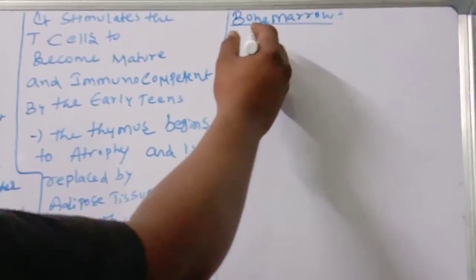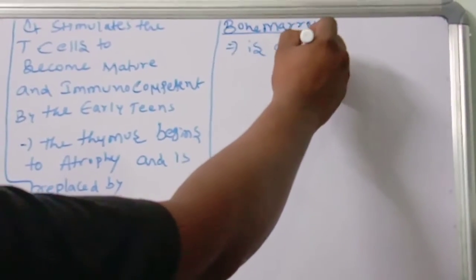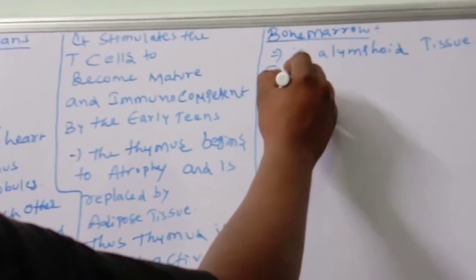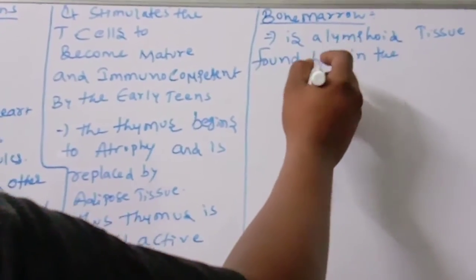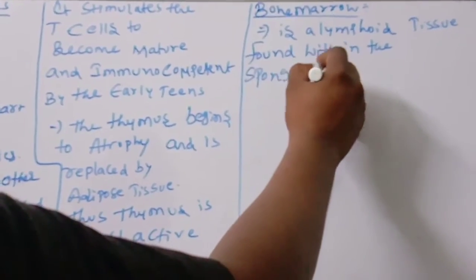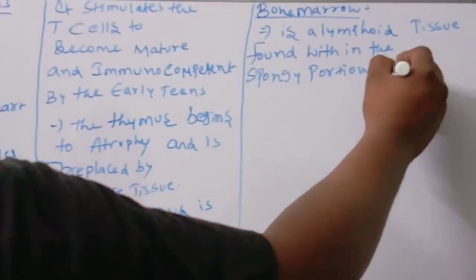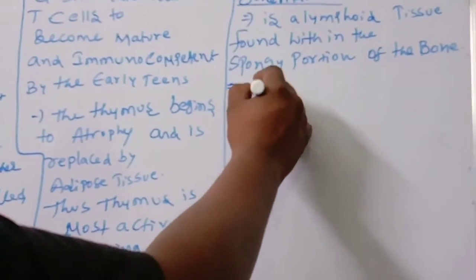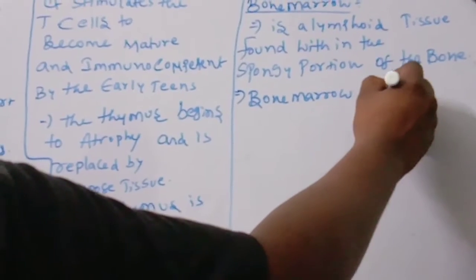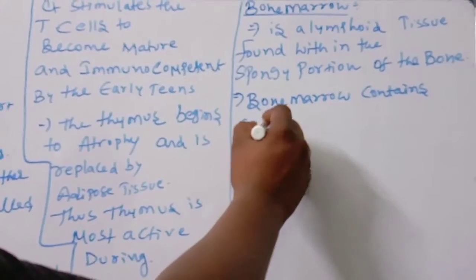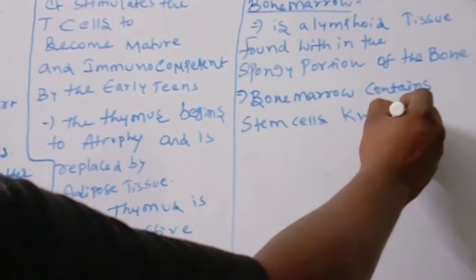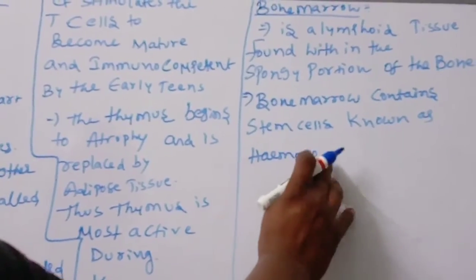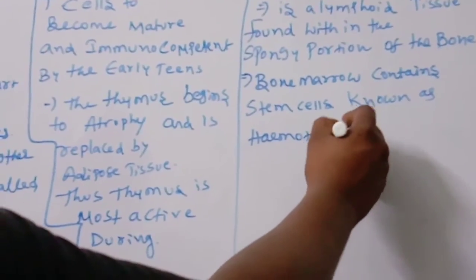The next primary lymphoid organ is bone marrow. Bone marrow is a lymphoid tissue found within the spongy portion of the bone. Bone marrow contains stem cells known as hematopoietic cells.